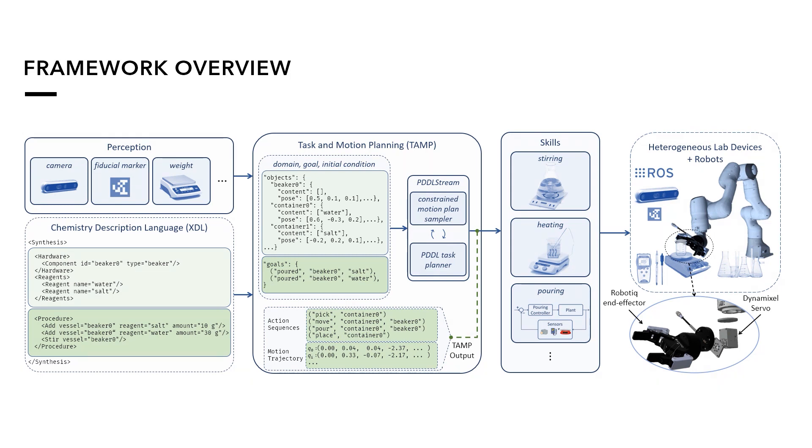The framework is composed of three main components: perception, task and motion planning, and skills. For input, the framework receives chemistry experiment instructions through a standard description language from a chemist and also perceives the workspace.